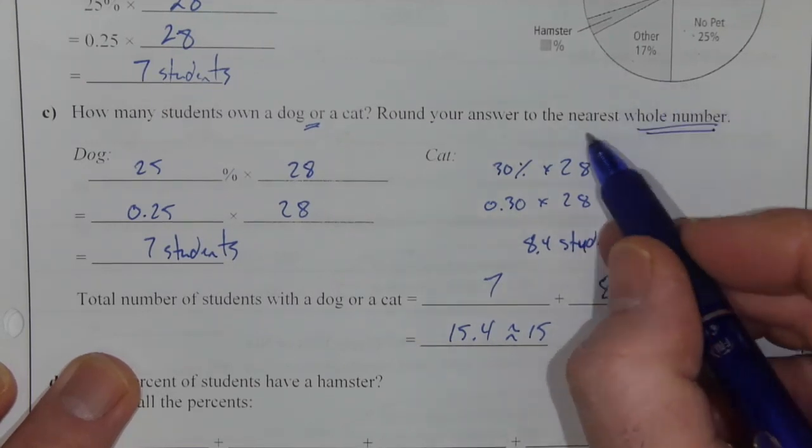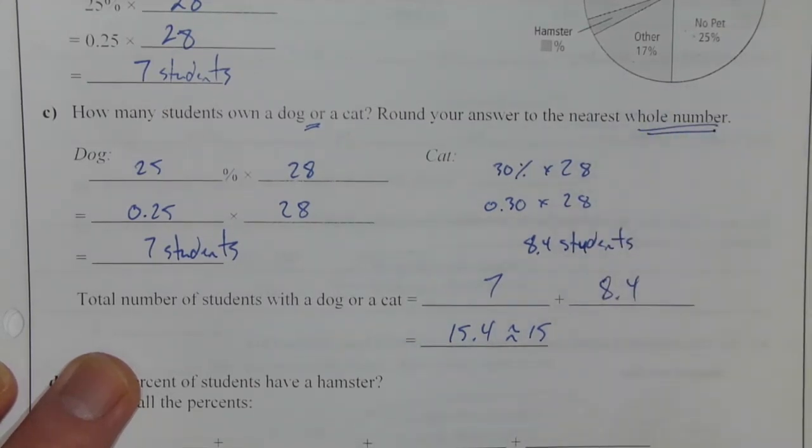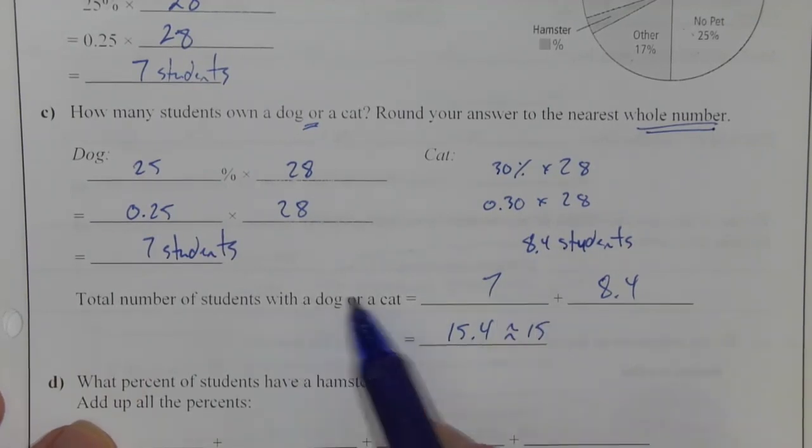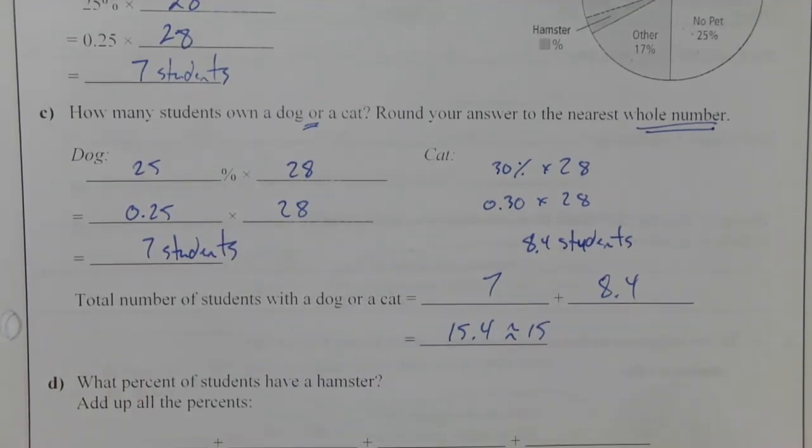which is why we're going to the nearest whole number with this particular question. So there are 15 students that have a dog or a cat, approximately.